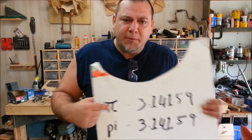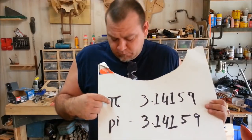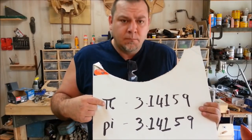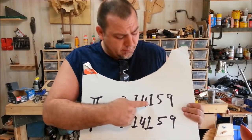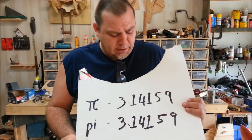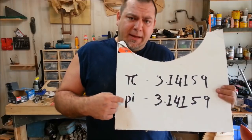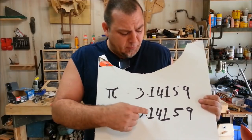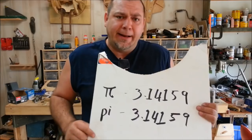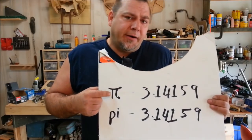In Greek, this symbol right here stands for 16. But here, it stands for 3.1459. Here PI, lowercase, also stands for 3.1459. I like this one better, it's pretty.